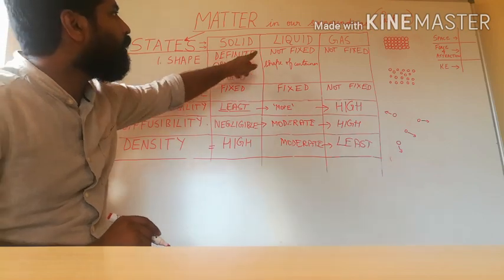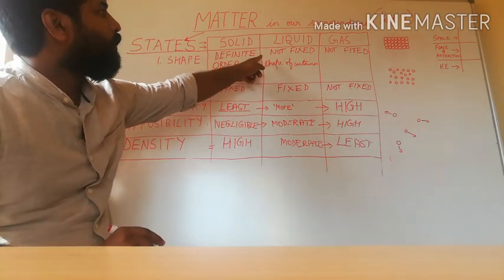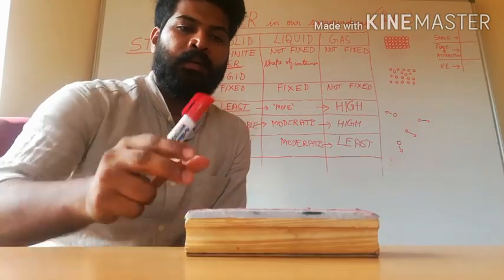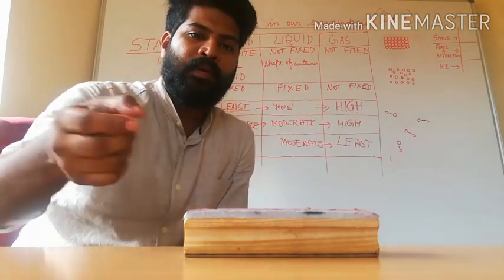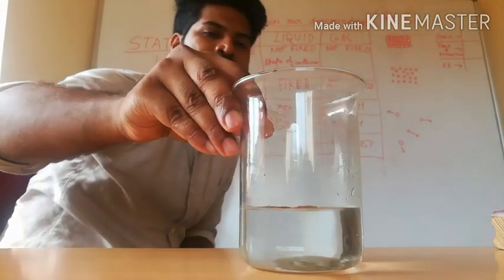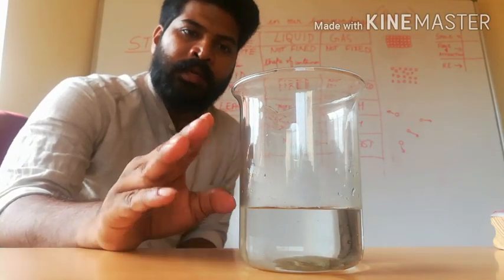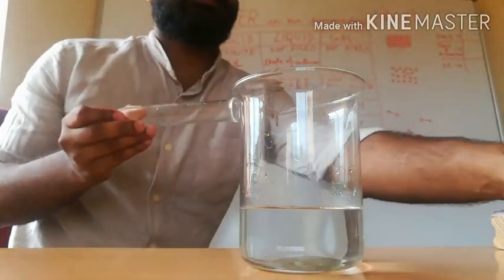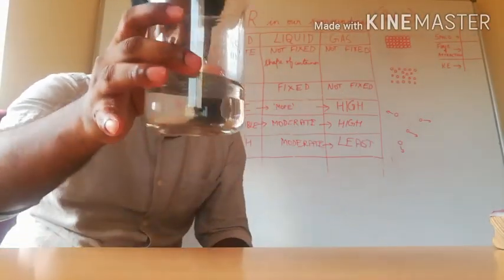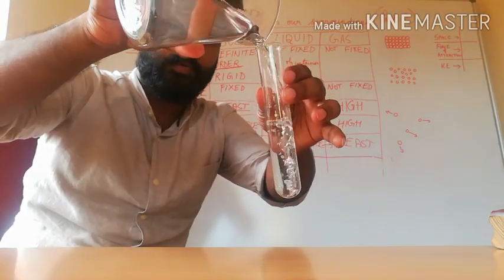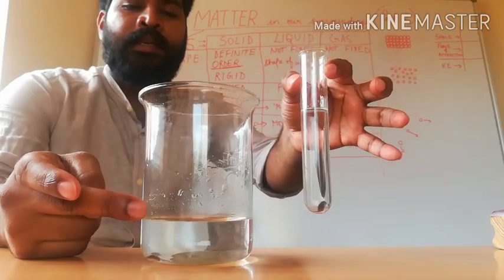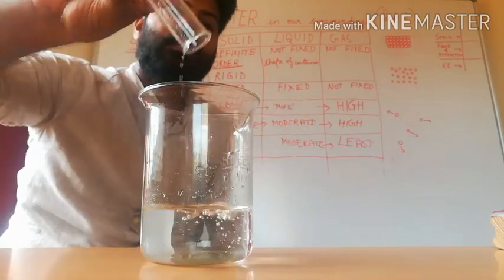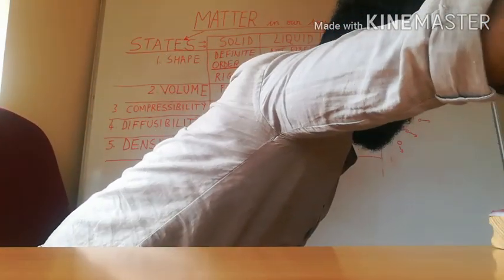Liquids do not have their own fixed shape. For example, a duster has its own shape, but water takes the shape of the container. If you pour it into a beaker, it takes the shape of the beaker; pour it into a test tube, it takes the shape of the test tube. Liquids take the shape of their container.